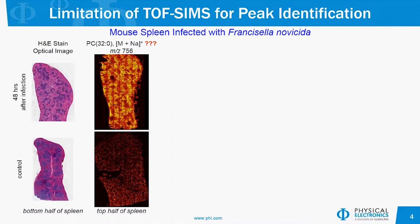As an example, I'll rely on a biological example. We were looking at two spleen sections from a mouse — one was infected and the other was a healthy control sample. In the process of looking at these spleen sections, one of the differences we noted was that there was a lipid at a mass-to-charge ratio of 756 that had a much higher abundance in the diseased tissue section. We want to identify that peak to know something more about the disease state and possibly how to treat it.